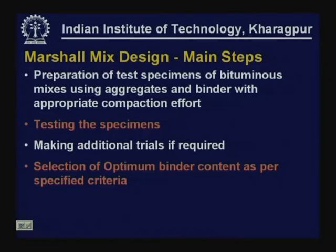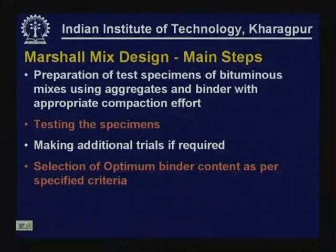The prepared specimens will be tested. If initial trials do not yield the required properties or do not satisfy specifications for a specific mix, additional trials must be made. The final step is the selection of optimum binder content as per the specified criteria. The criteria for selecting the optimum binder content are usually specified within the given design procedure.